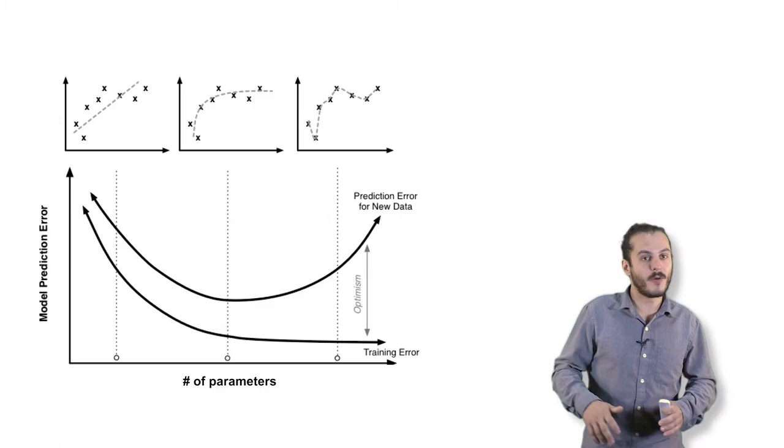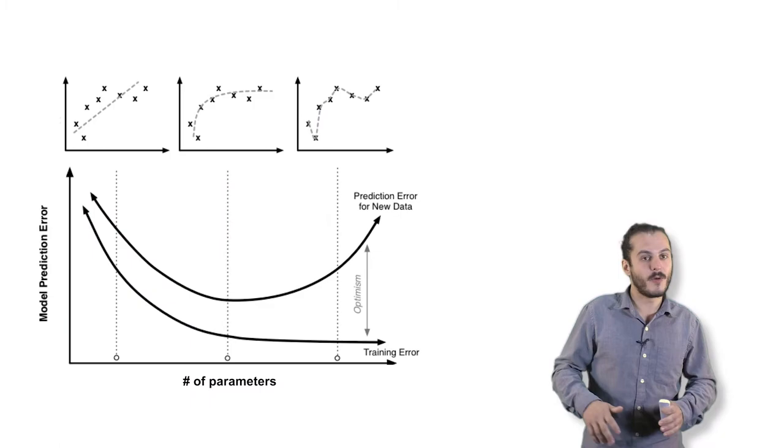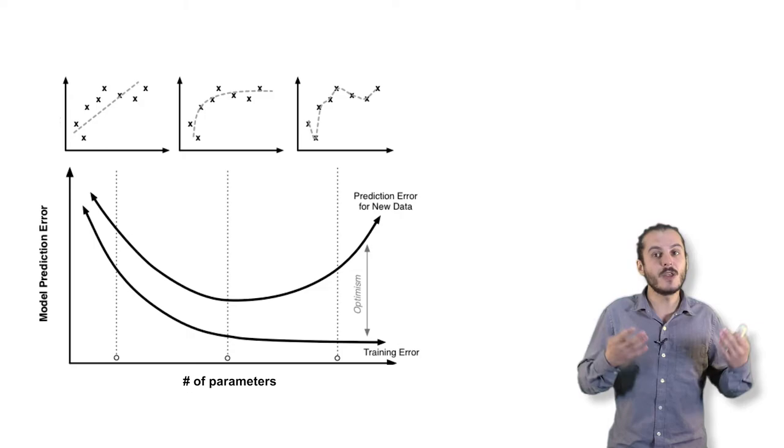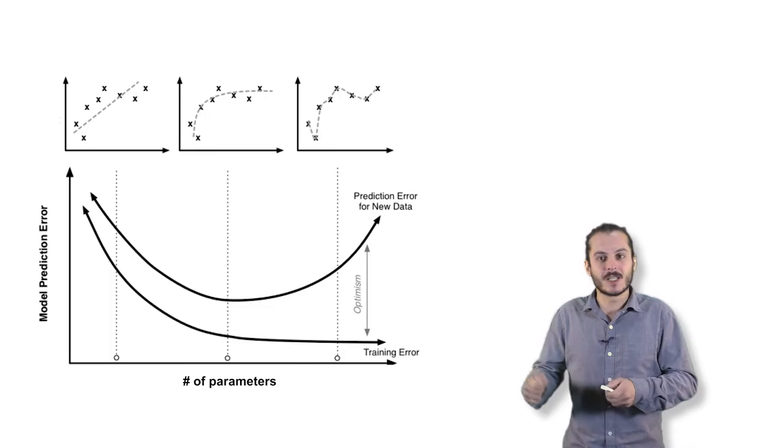We can think of taking a model and making it more complicated, for example, by increasing the number of parameters and the number of knobs it can tune. Usually, the training performance, the ability to not make mistakes in the training data, would continue to go down as we add more and more parameters. We can learn and memorize the training data set better and better and fit every nook and cranny.